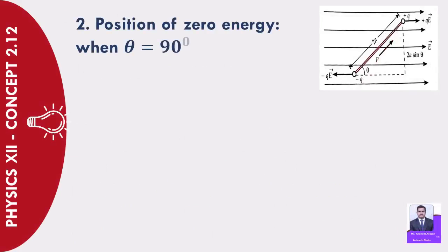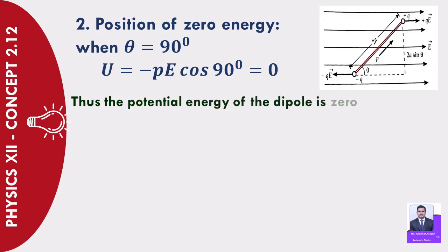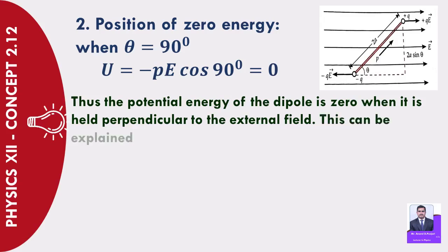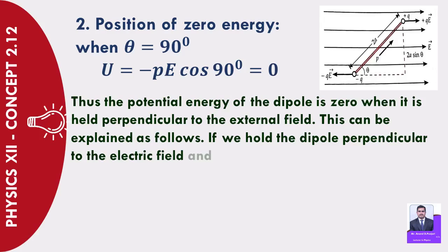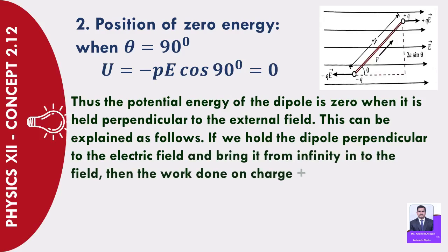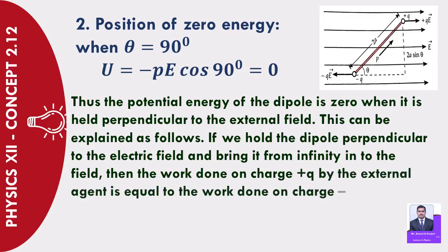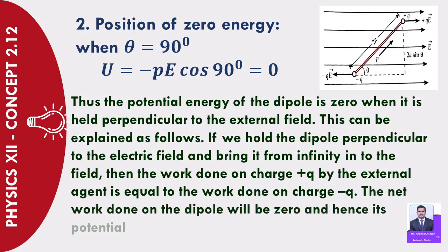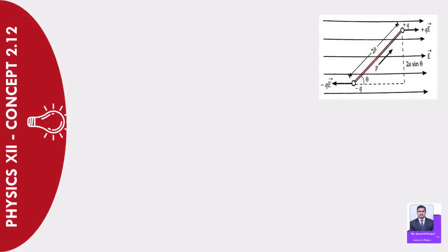Case 2 — Position of zero energy: when θ = 90°, U = −PE·cos 90° = 0. Thus the potential energy of the dipole is zero when it is held perpendicular to the external field. This can be explained as follows: if we hold the dipole perpendicular to the electric field and bring it from infinity, the work done on charge +q equals the work done on charge −q, so the net work done on the dipole is zero and hence its potential energy is zero.